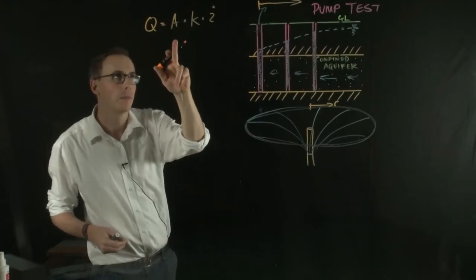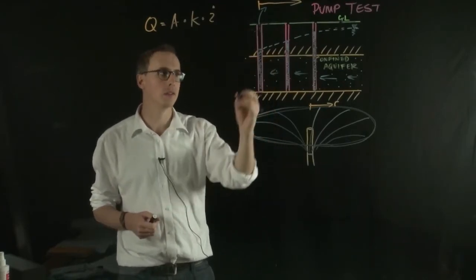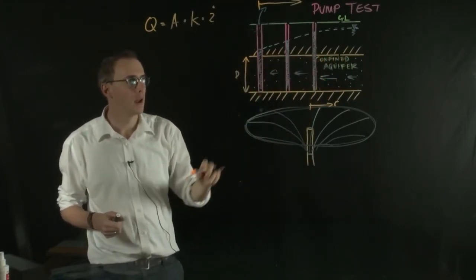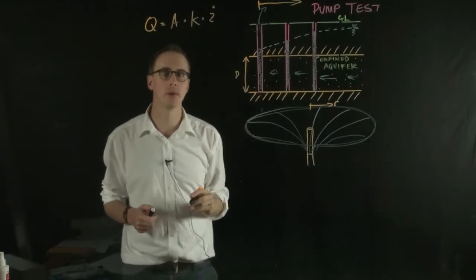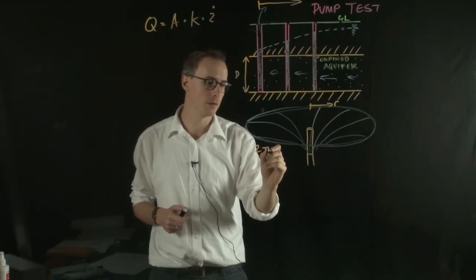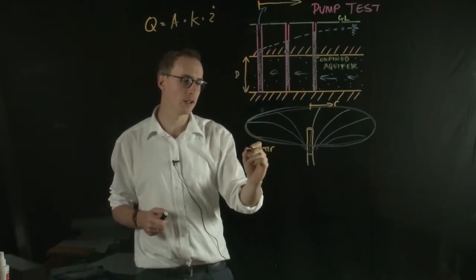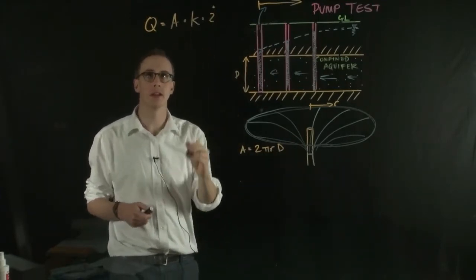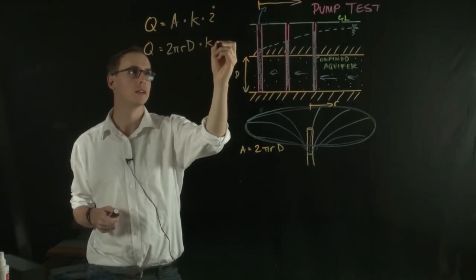So we need to figure out what the other parameters are within this equation. The flow area is really just the depth of the confined aquifer multiplied by the area. Now the area is equivalent to the circumference of this circle multiplied by the depth. So the circumference is 2πR and the depth is D. So the area is equal to 2πRD. So we have Q equals 2πRD times K times I.